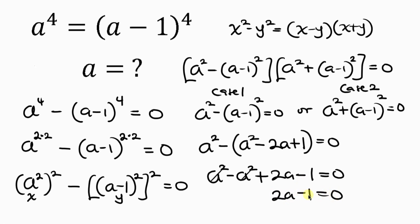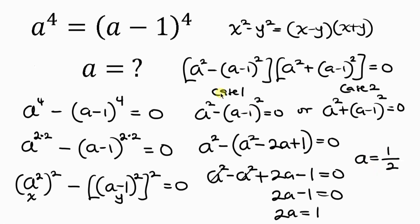Moving negative 1 to the right, we have 2a equal to 1. Dividing both sides by 2, we get a equal to 1 over 2. This is the real solution for a from Case 1.